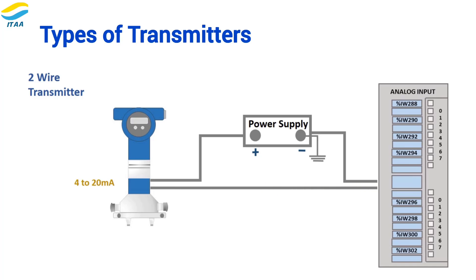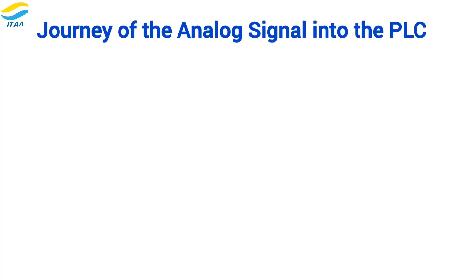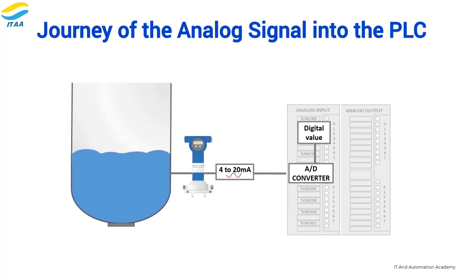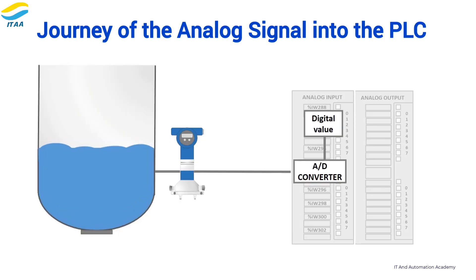This signal travels to the analog input module of our PLC. That 4 to 20 milliamp signal arrives at the PLC's analog input module, where it's processed by an analog-to-digital converter, or ADC. The ADC converts the continuous analog signal into a digital raw value that the PLC can understand.